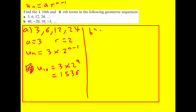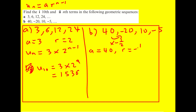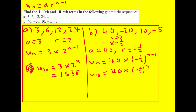Part b is the sequence 40, −20, ... — a geometric sequence with a negative common ratio, because I'm multiplying by −1/2 each time. So a = 40 and r = −1/2. Then u_n = 40 × (−1/2)^(n−1). Substituting n = 10 gives u_10 = 40 × (−1/2)^9, which equals −5/64.